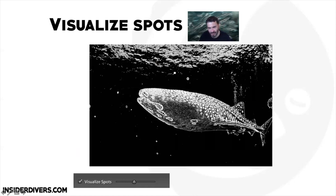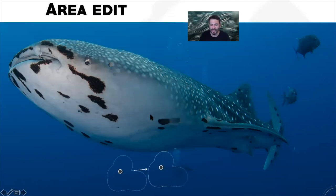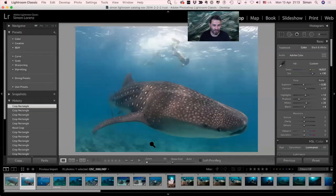This visualization of your backscatter makes it very easy to just click on these different spots. Area edit is essentially when we're not just having a spot to remove but want to remove something like a diver with bubbles or a fish in the top right corner. The way we do that is by dragging the crop over the subject — it works really well now, particularly with blue backgrounds.